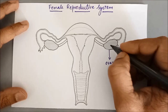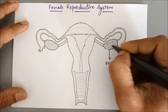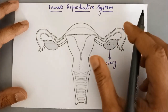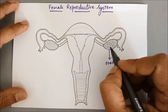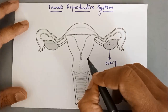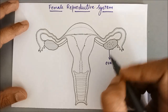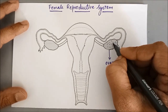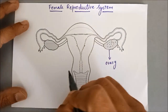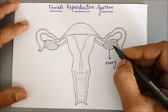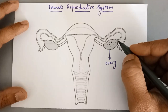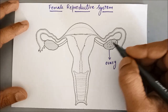This ovary contains lots and lots of eggs. These eggs are thousands in number, and they are produced during the baby child when it is inside the mother's womb. So these eggs are immature eggs — there are thousands of them in both ovaries, and these eggs only mature when the girl child reaches puberty.